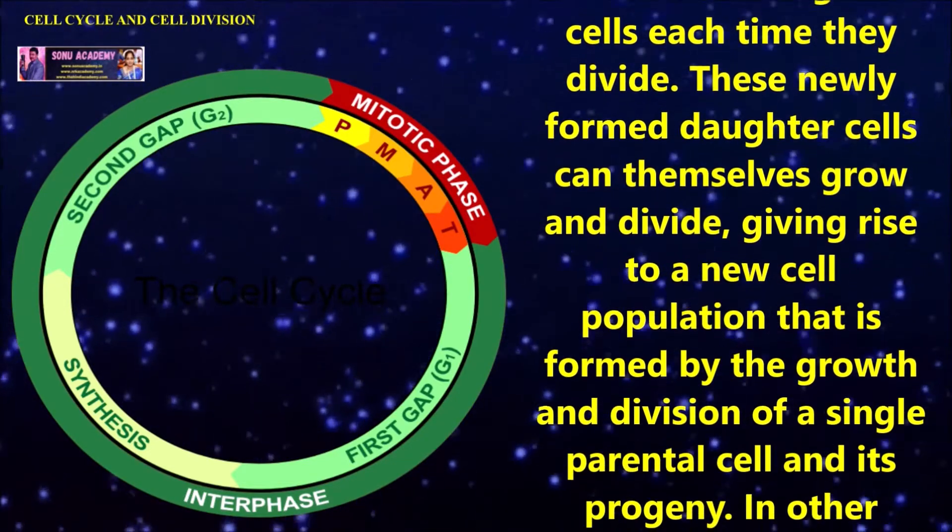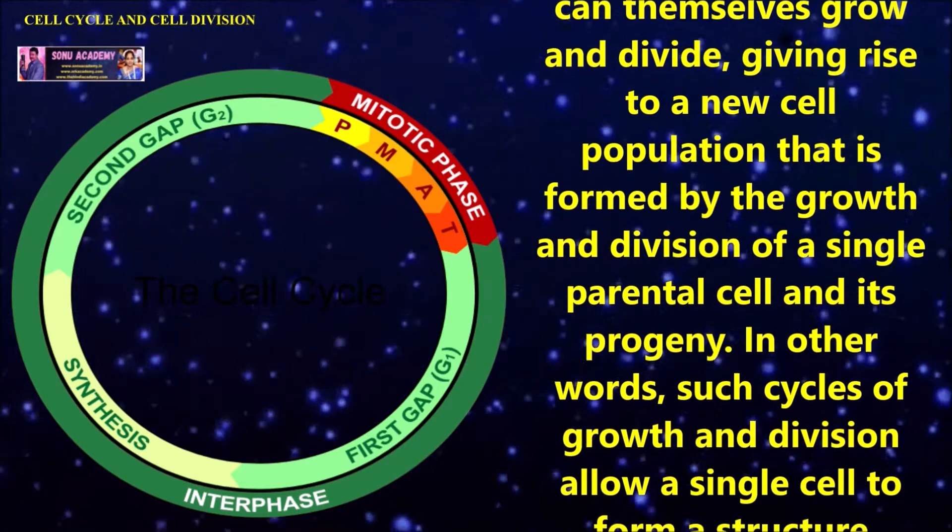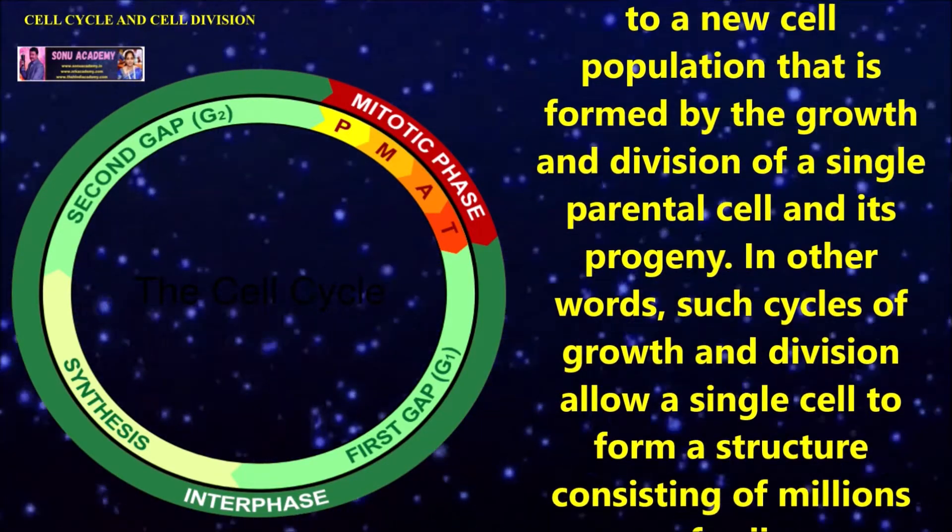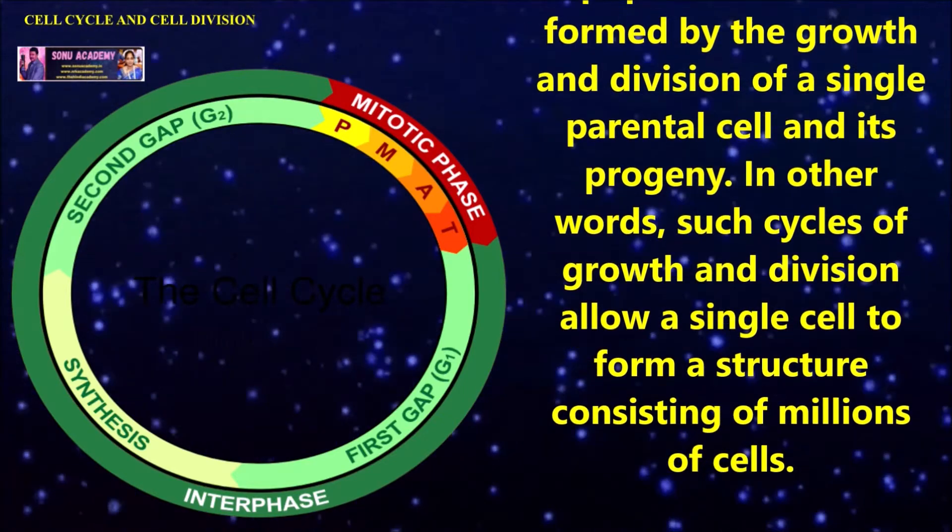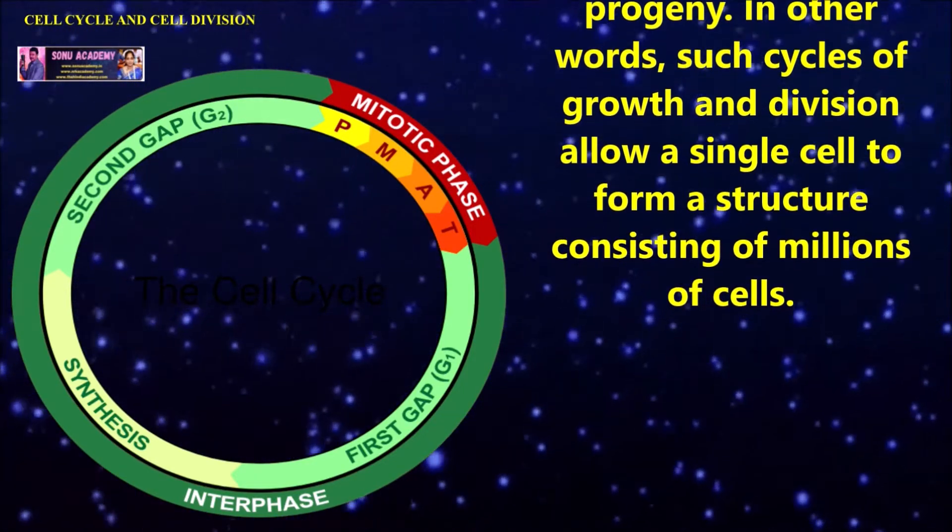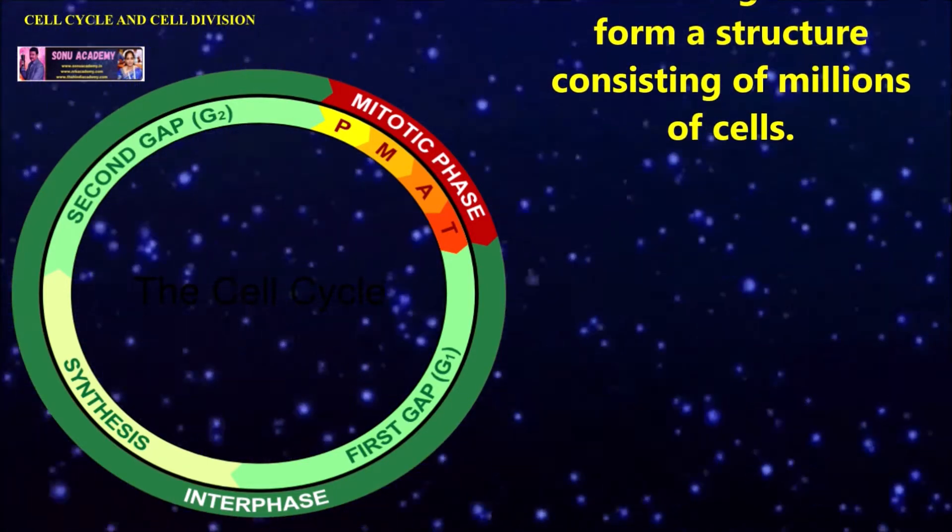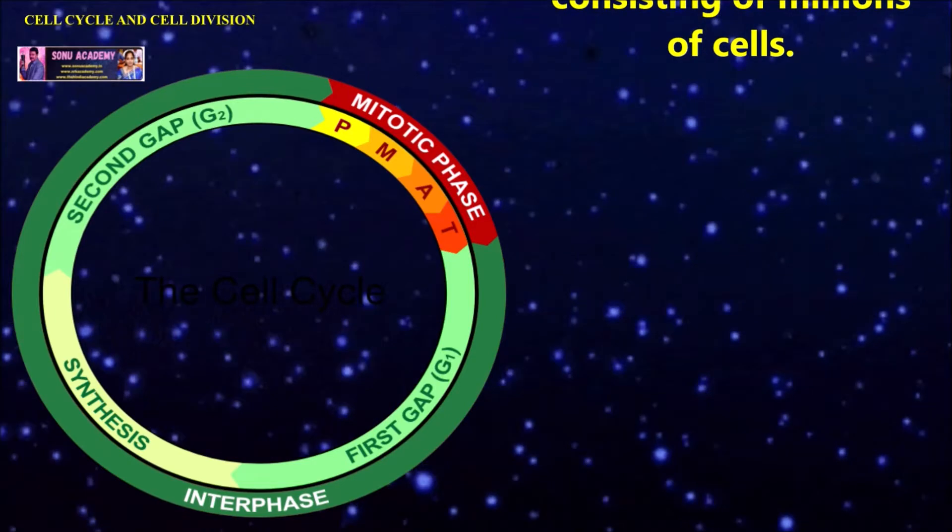These newly formed daughter cells can themselves grow and divide, giving rise to a new cell population that is formed by the growth and division of a single parental cell and its progeny. In other words, such cycles of growth and division allow a single cell to form a structure consisting of millions of cells.